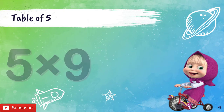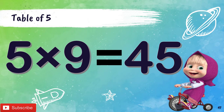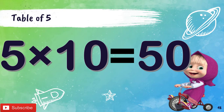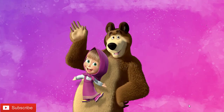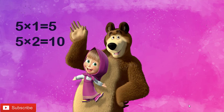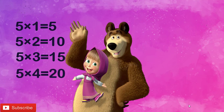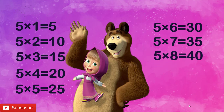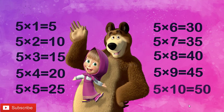Table of 5: 5 1's are 5, 5 2's are 10, 5 3's are 15, 5 4's are 20, 5 5's are 25, 5 6's are 30, 5 7's are 35, 5 8's are 40, 5 9's are 45, 5 10's are 50.